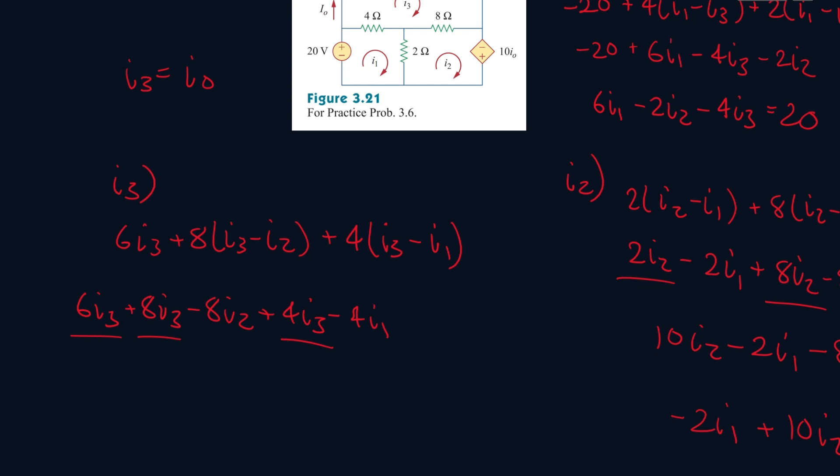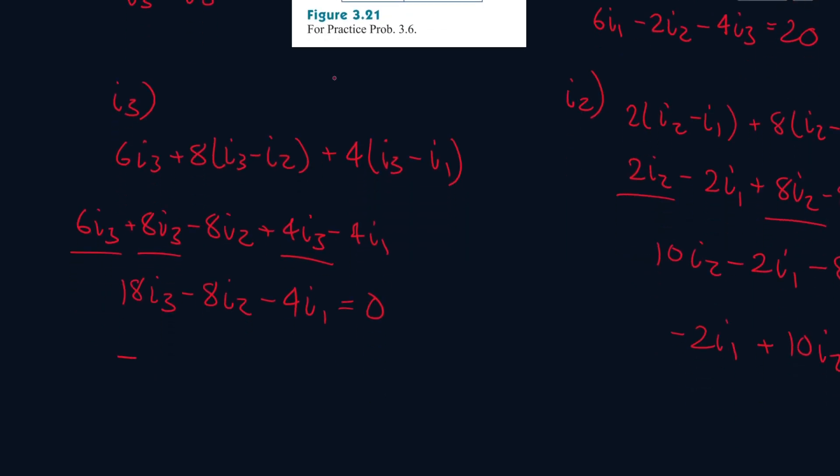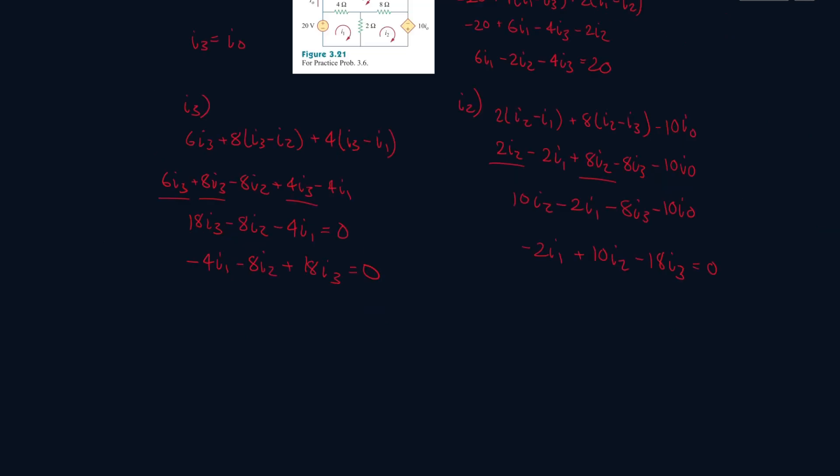So we have 18I3 minus 4I1 minus 8I2 equals 0. And obviously let's rearrange it correctly. So minus 4I1 minus 8I2 plus 18I3 equals 0.